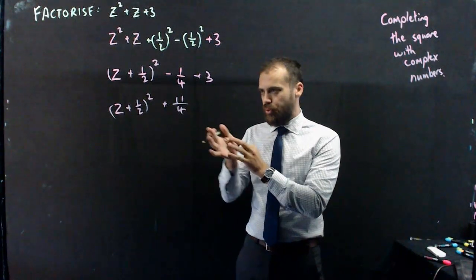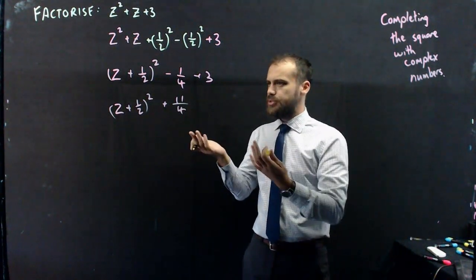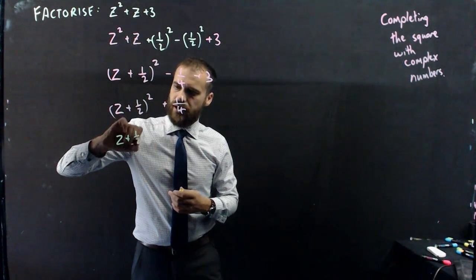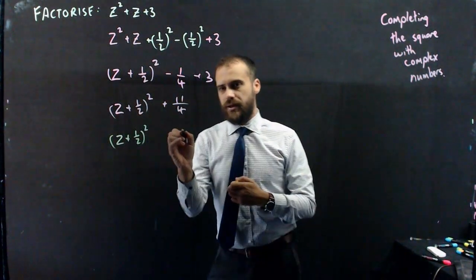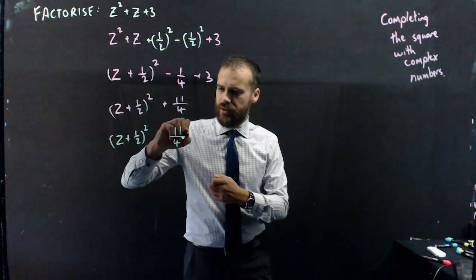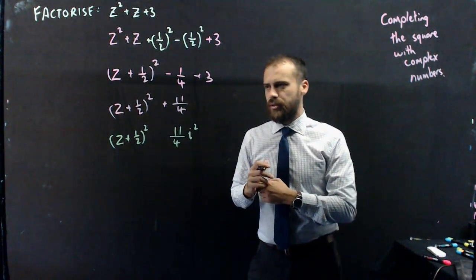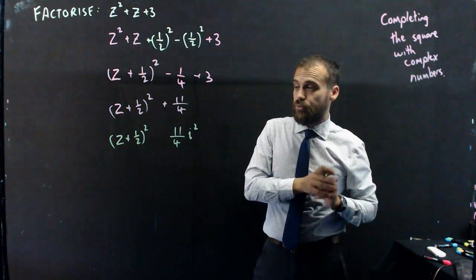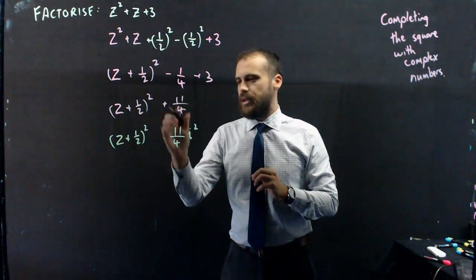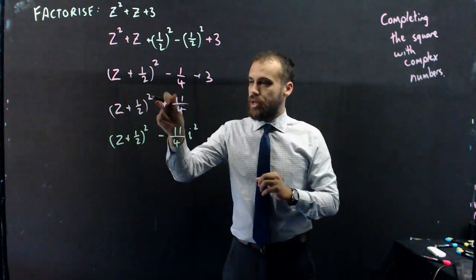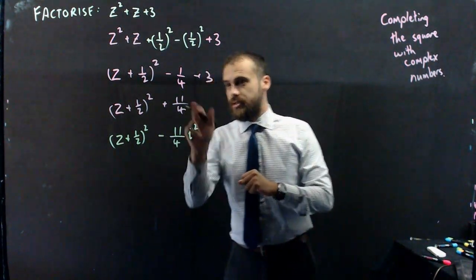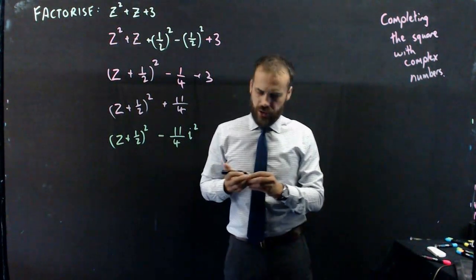So it kind of feels like we stall out at this point. It's a bit tough to see how are we going to factorize this? Well, we can use a really cool trick here. We can say z plus 1 half squared, and then I'm going to take the 11 over 4, and I'm going to multiply it by i squared. Now, think of what i squared is. i squared is negative 1. So if I'm multiplying 11 over 4 by negative 1, I'm going to have to take that positive and turn it into a negative. Now, this line is equal to this line because 11 over 4 times negative 1 times negative 1 is 11 over 4. So why on earth have I done this?